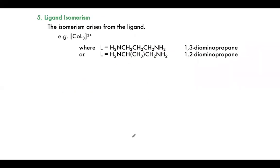Ligand isomerism arises from the ligand itself. Some ligands have the same atomic formula but different structures. For example, 1,3-diaminopropane has the nitrogens on either end, whereas 1,2-diaminopropane has one of the carbons branched — the amine is no longer in the chain but is instead a branch. So the ligand itself exists in different structural forms.